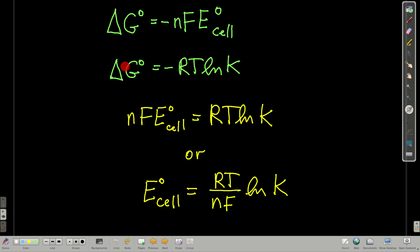We also know from before that delta G zero is equal to negative RT ln of K at equilibrium. So we can say, because these are the same on the left, we can set this equal to that, and we get nFE zero of the cell is equal to RT ln K. Or, rearrange it a little bit, we can get a relationship here between E zero of the cell and natural log of K: E zero equals RT over nF ln K. Pretty useful.